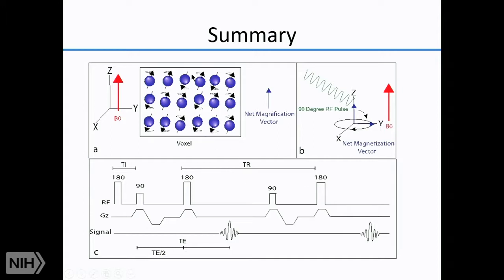To review: you have spins aligned with or against the magnetic field; you apply a radio frequency pulse to deviate them into an alternate plane; as they recover, you acquire signal, which you can influence with various pulse sequences. There are no x-rays involved — it's fairly low energy with no ionizing radiation — and yet you obtain really fantastic images from this characteristic of nature.